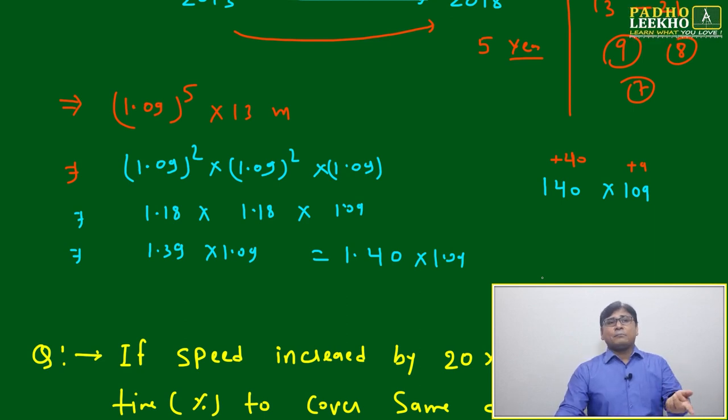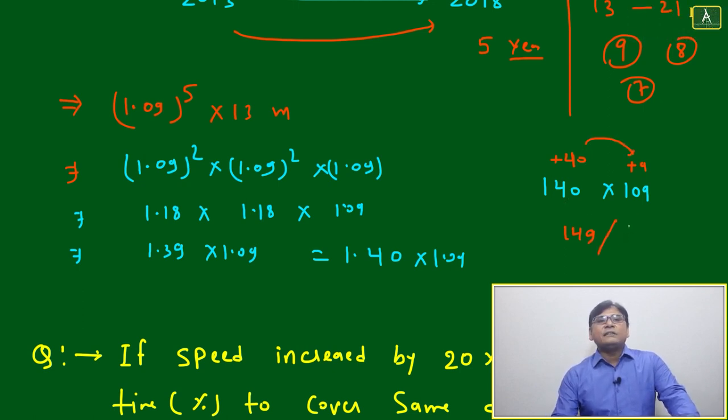You add 40 and 9: 140 plus 9 or 109 plus 40, cross-wise—either this 40 with 109 or 140 with 9. That gives 149, keep it. Now multiply the deviations: 40 times 9 equals 360.